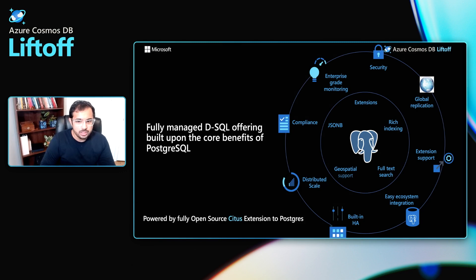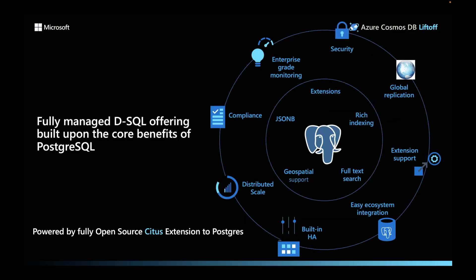Azure Cosmos DB for Postgres is Azure's fully managed distributed SQL offering built upon the core benefits of Postgres. It stays native to Postgres, supporting the latest versions and rich features including the JSONB data type, extensions like PostGIS, rich indexing, and so on. It is powered by the fully open source Citus extension to Postgres for distributed scale.